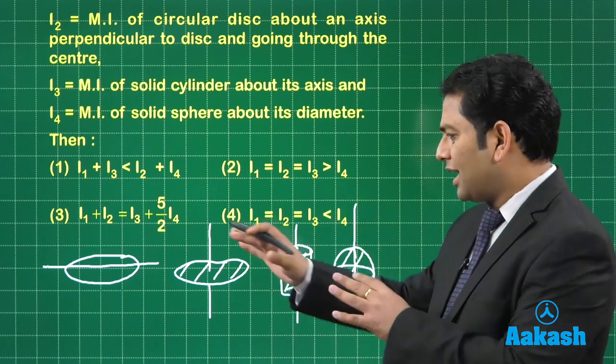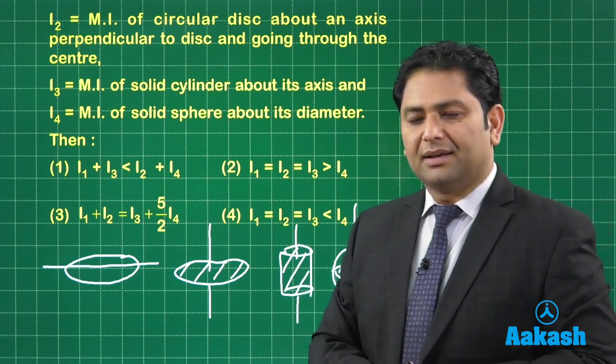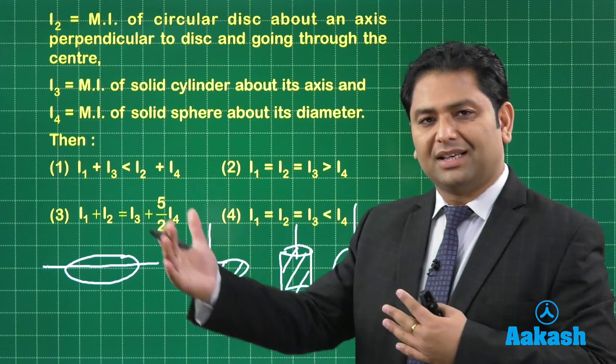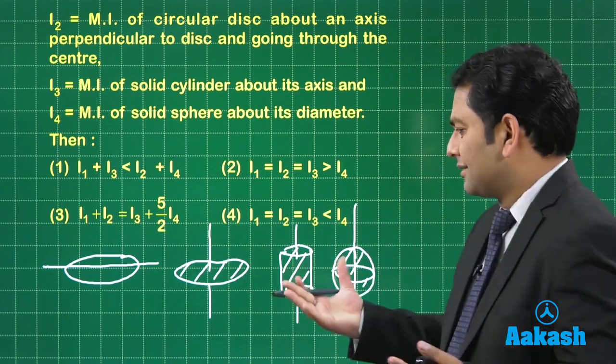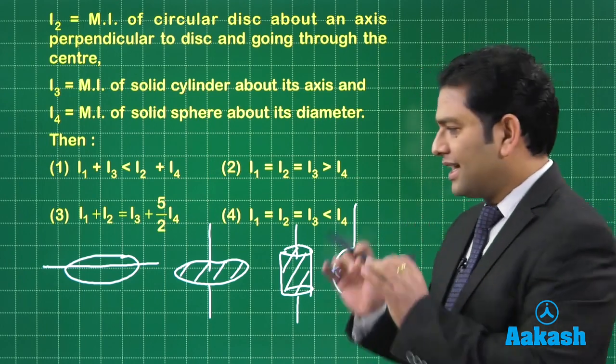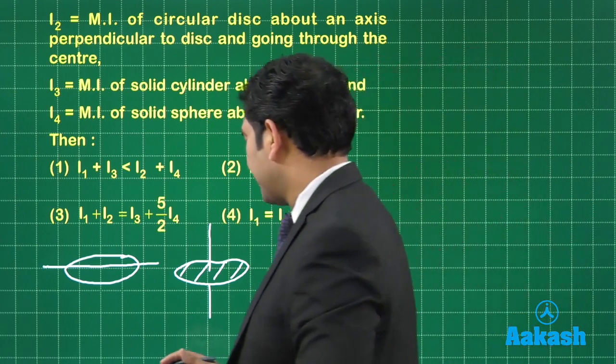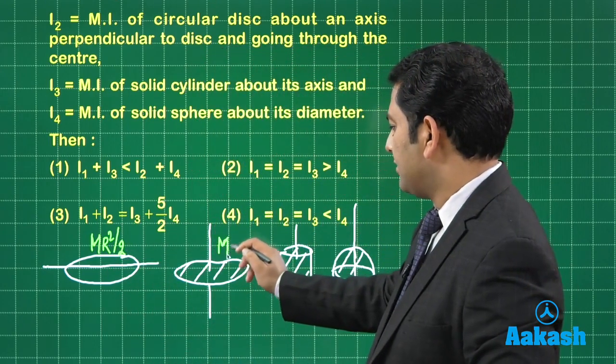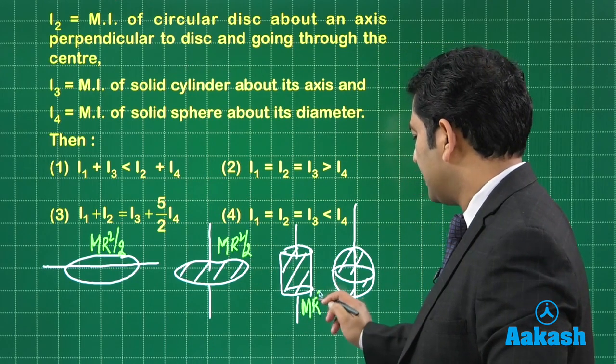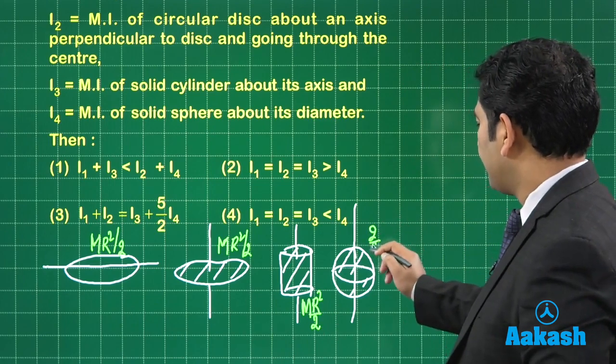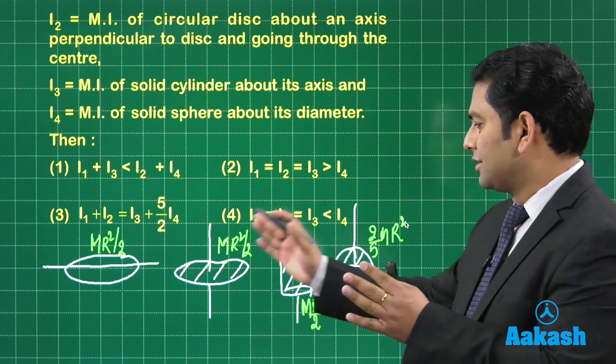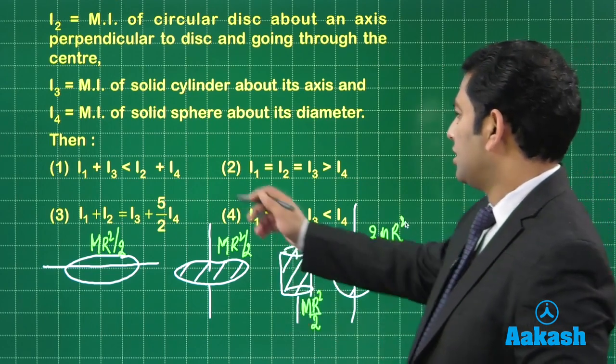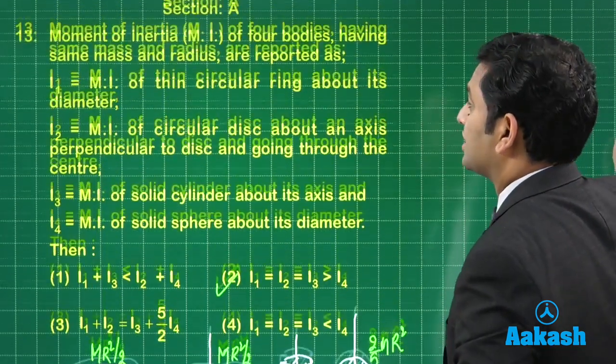Now there's no direct way how we can just compare and get the qualitative answer. Because the axis they are very much different. Like had it been the same axis for the ring and disk then we could have at least reached the answer by qualitative reasoning. But we don't have any such facility. So the only thing that I have is that I got to see the numerical value. For the ring, that is MR square by 2, isn't it? And that's I1. For this, it's MR square by 2. Okay. For this is MR square by 2. For sphere is 2 by 5 MR square. So that's a straight forward one. 1, 2, 3. They are equal and that is greater than 4. So where is the option? Option number 2. So that was about question number 13.